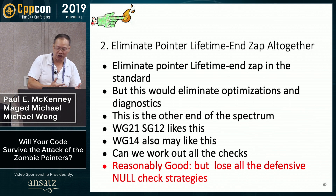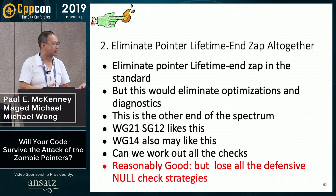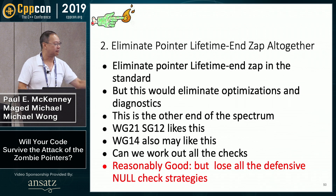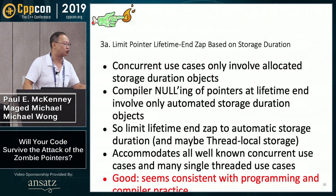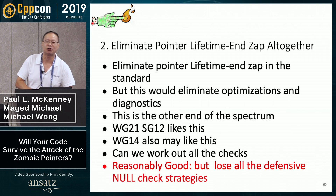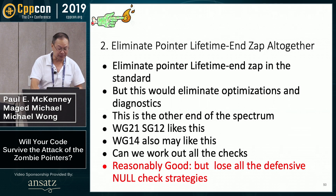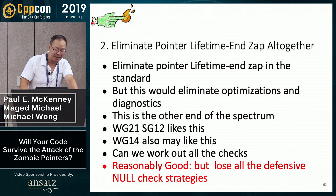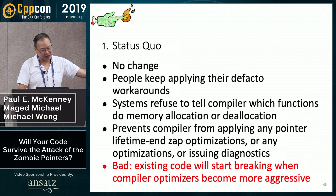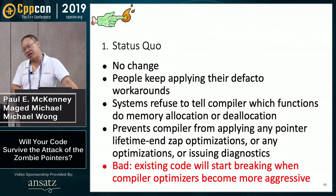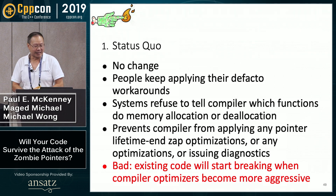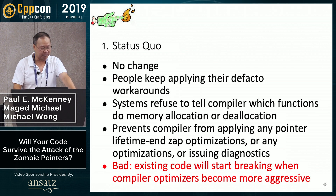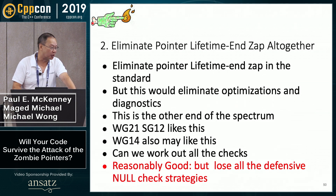The opposite solution: totally eliminate pointer lifetime-end-zap. Given that ignoring it is common practice among sequential C developers, one solution is to reflect that in the standard by completely eliminating pointer lifetime-end-zap. This would also eliminate the corresponding diagnostics and optimizations. It's therefore worth looking at more nuanced changes, because we might not want to lose those diagnostics. This solution is not particularly bad — in fact we think it's reasonably good, though you do lose all those defensive null-pointer checks.